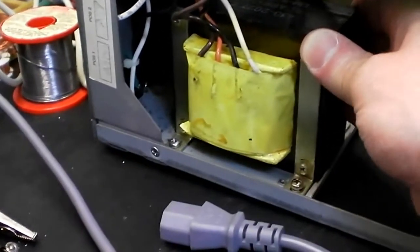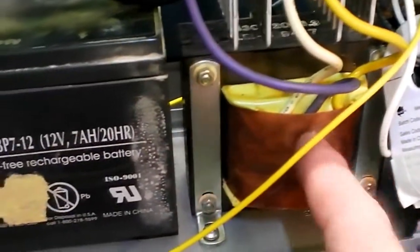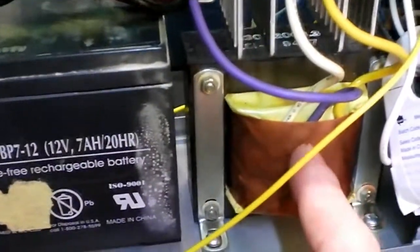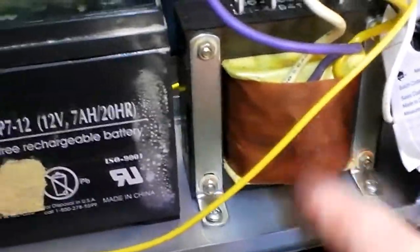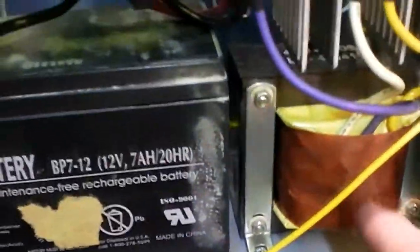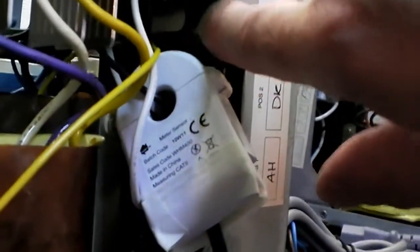But the quiescent current that's used by this type of UPS is quite high and on this type doesn't do that. That transformer only comes into play when it's actually being used as an inverter. The transformer that charges the battery in this one is that little tiny thing, if you can see that there, that little tiny transformer.